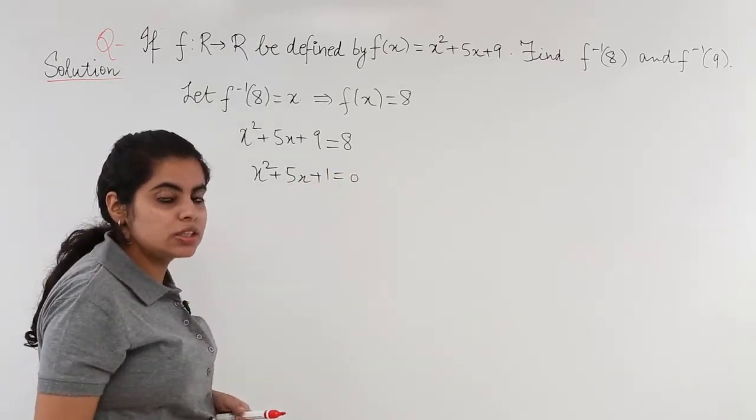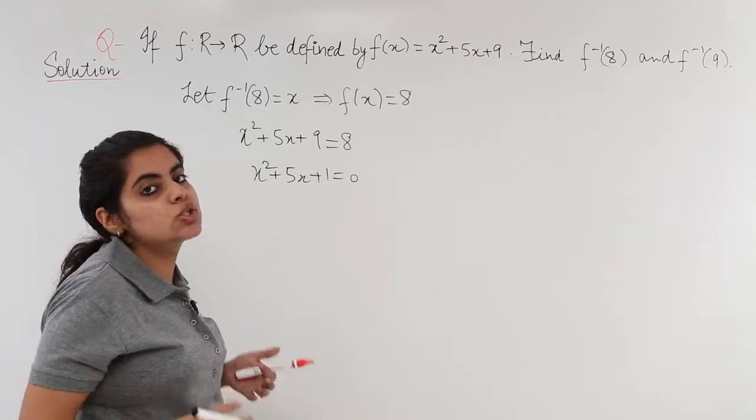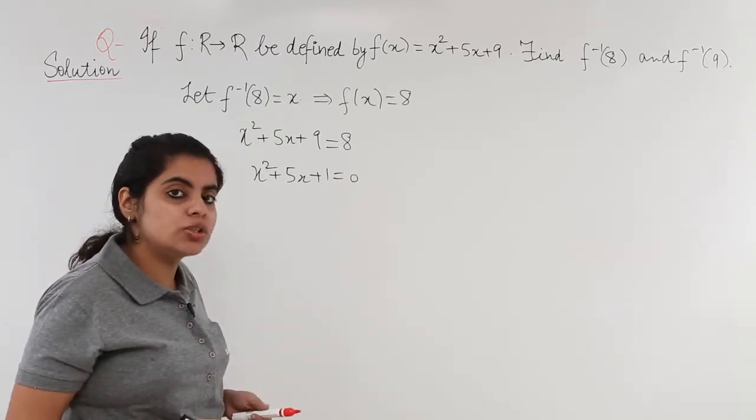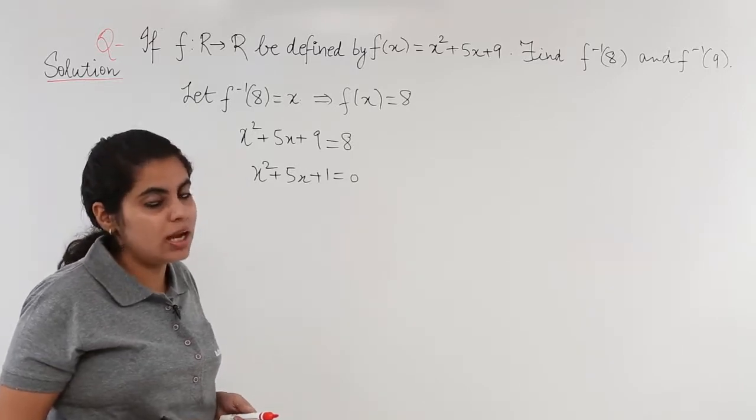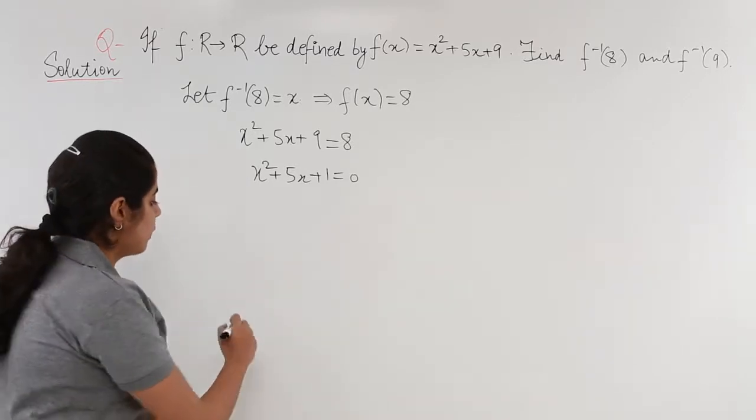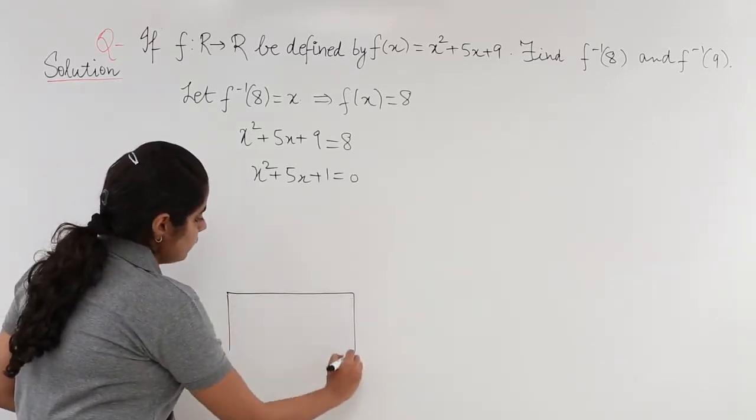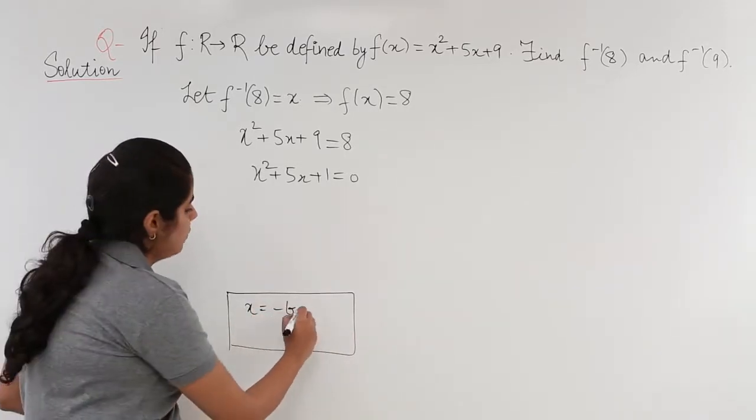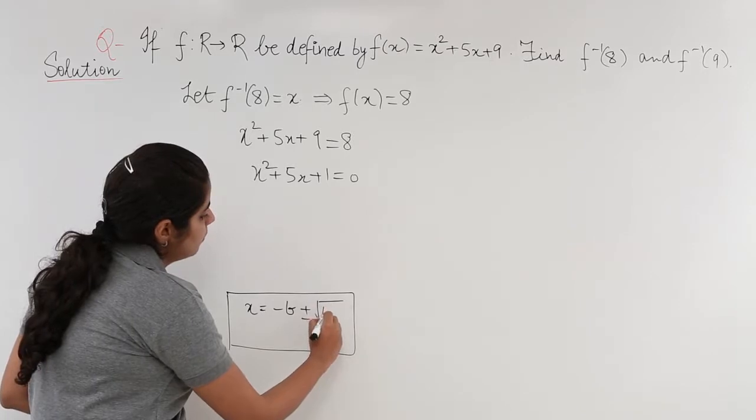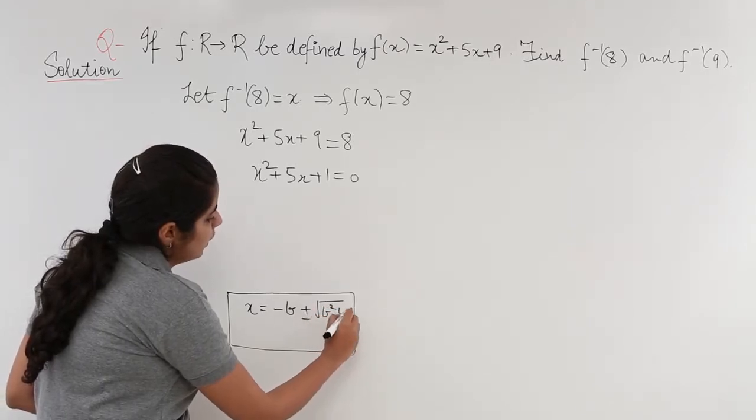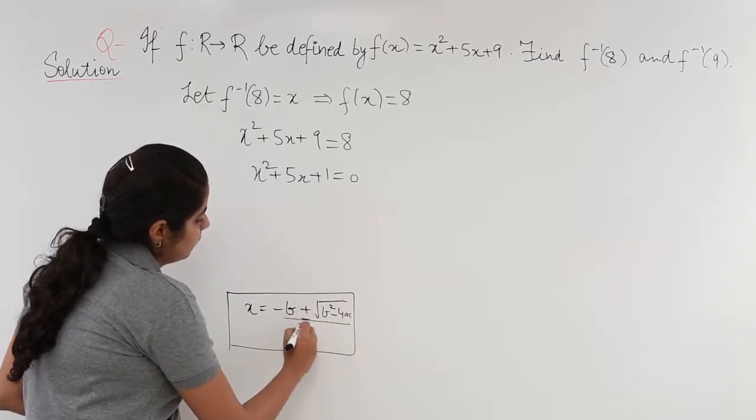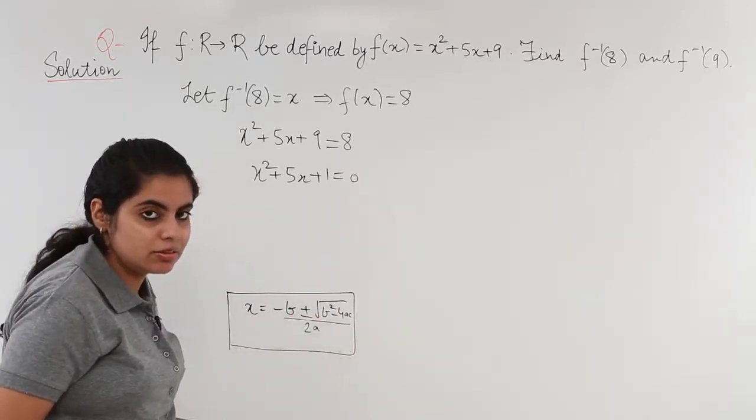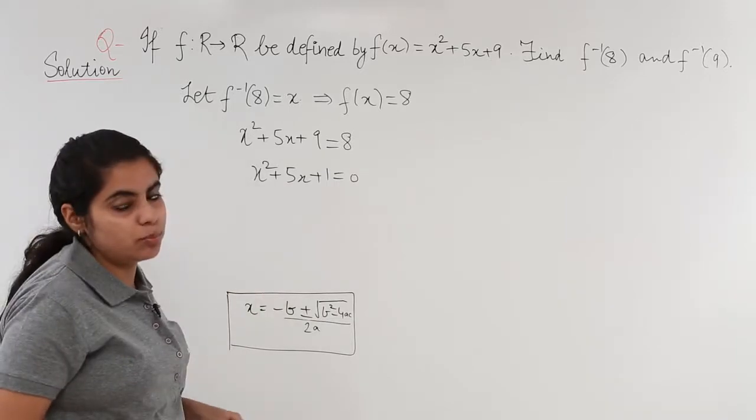We have a quadratic expression. What do we need to do? We need to solve this quadratic for x. We will get two roots and the solution can be done by quadratic formula. The quadratic formula is x = (-b ± √(b² - 4ac))/(2a). We have studied this formula in our junior classes, class 10th.